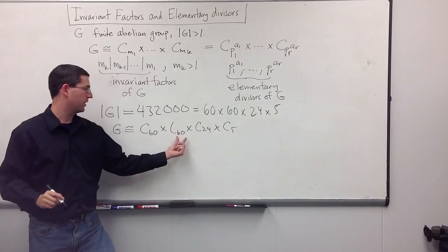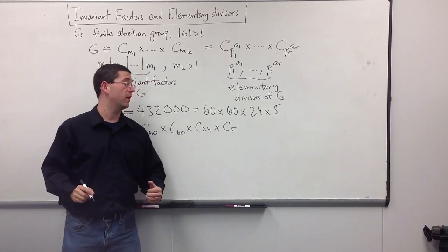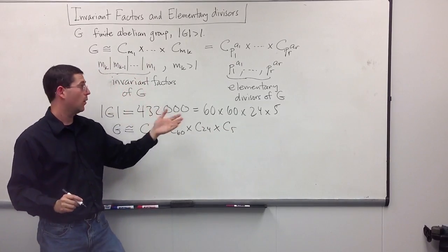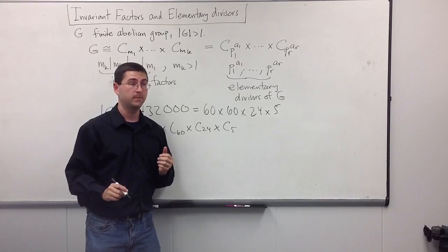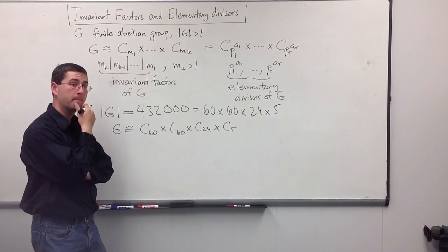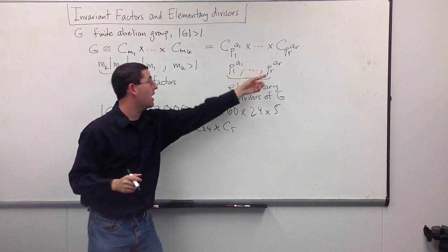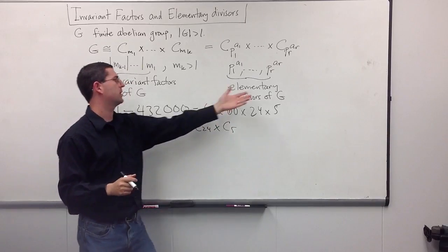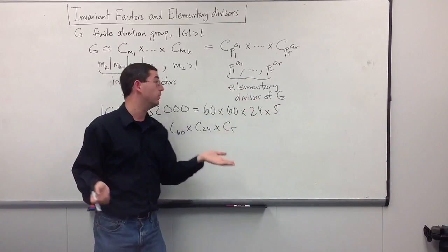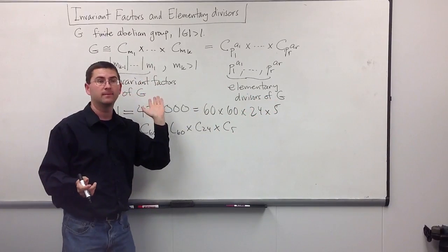So, do these numbers 60, 60, 24, and 5 represent invariant factors or elementary divisors? Think about that for a moment. Hmm. Yeah, there's no primes here other than the five. So, you know it's not the elementary divisor. So, you must conclude it's the invariant factors, right? Wrong.